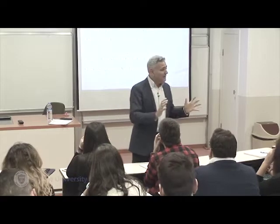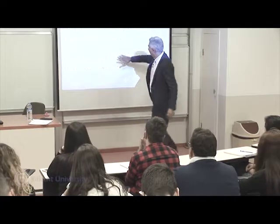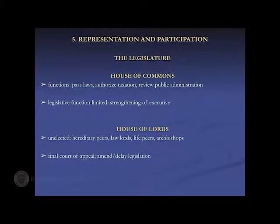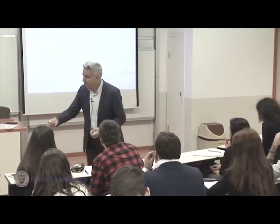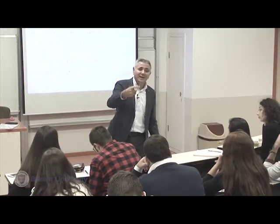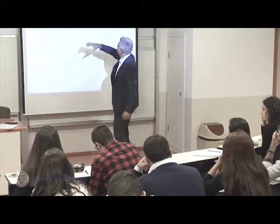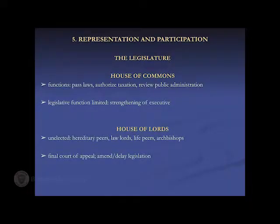In this system, we have a bicameral legislature: the upper house, the House of Lords, and the lower house. Whenever we refer to the parliament across advanced industrialized countries, we generally refer to the House of Commons. The British parliament houses two chambers, one of which — the House of Lords — is hereditary. When we refer to parliamentary democracy, we mean the House of Commons. The legislature also houses the crown.